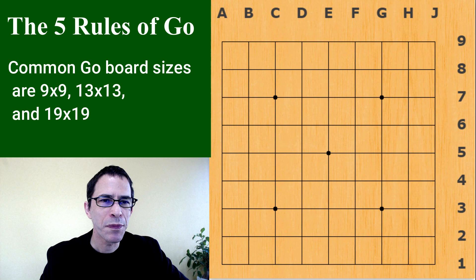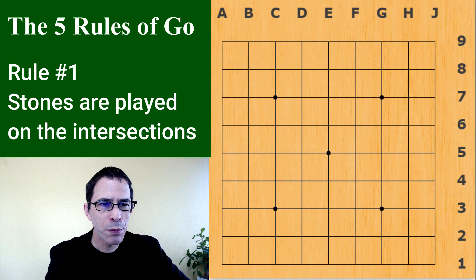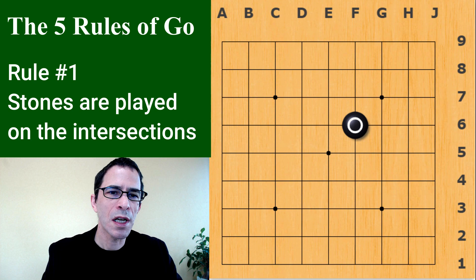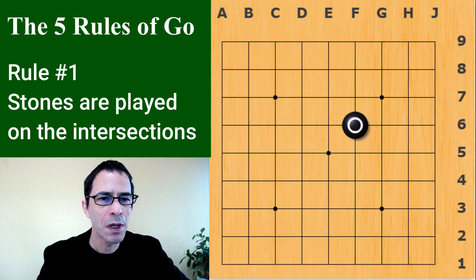You start with an empty board and when you play you put a stone on one of the intersections. So we'll start with Black playing this move. Any move on any of these intersections is legal, and one move consists of placing one stone. The pieces are called stones and they're round images here.